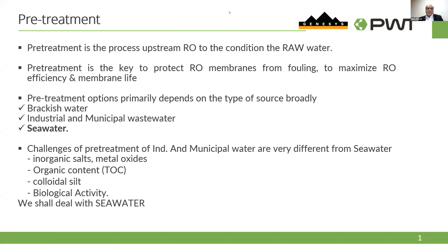Some of the challenges of pretreatment of industrial and municipal water are very different from seawater. If you classify into two categories, industrial and municipal water will require a certain pattern of treatment — sand filter, biological filter, biological treatment, and a DAF. It all depends on what is coming into the raw water: inorganic salts, metal oxide, organic content (TOC), colloidal silt, or biological activity. We shall deal more with seawater today.